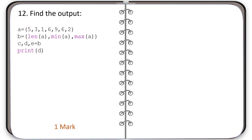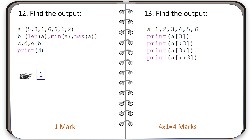Question number 12: again, a code is given and you have to find the output. The correct output is shown. Question number 13: see the code and find the output. The correct output is shown.